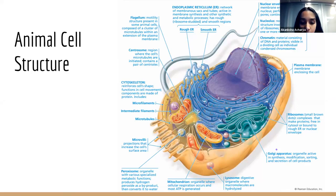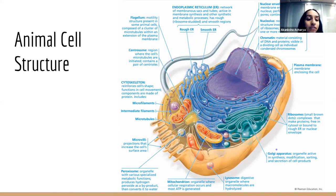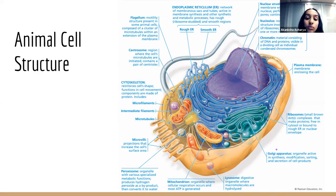Next we have the vacuole. Vacuoles basically do storage in our cells — they store anything that needs to be shipped out. In plant cells, there is a large central vacuole near the nucleus. If you've ever seen a plant start wilting — drooping and dying — it's because they likely don't have enough water. The vacuole in plants, especially the central vacuole, helps with water storage. The more water, the more expanded the cells are and the more sturdy the plant. If it doesn't have water, the cells droop — that's why you get a wilted flower.